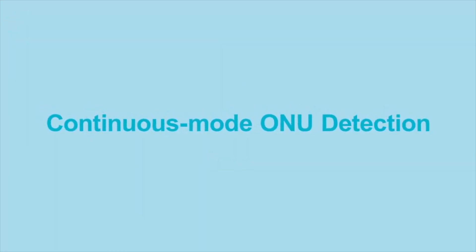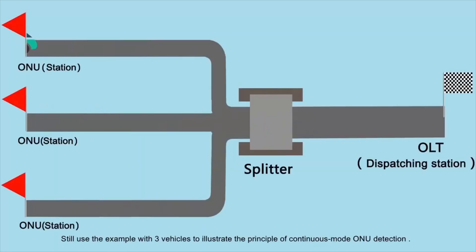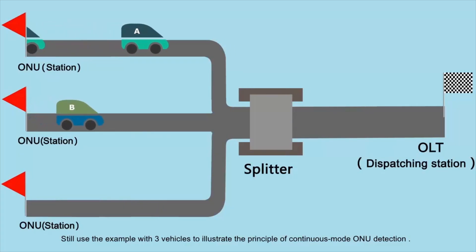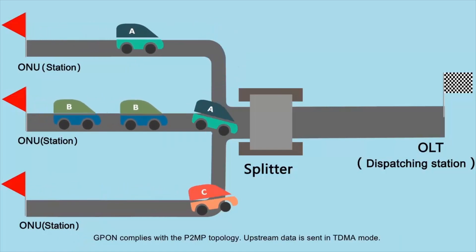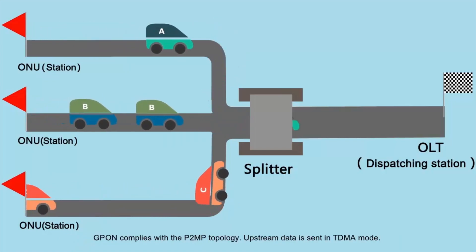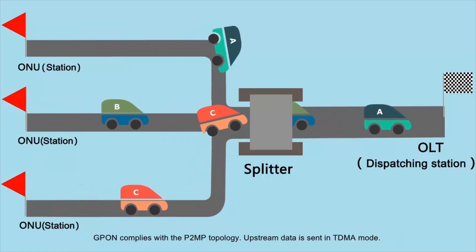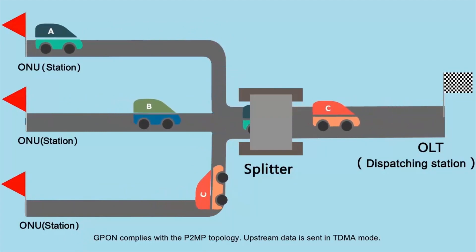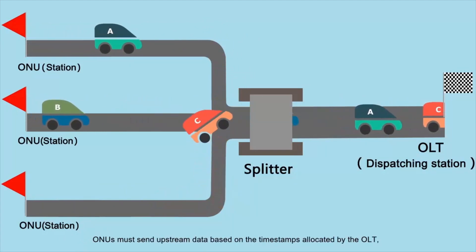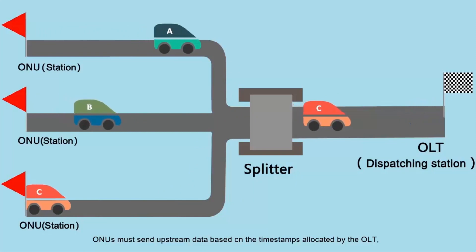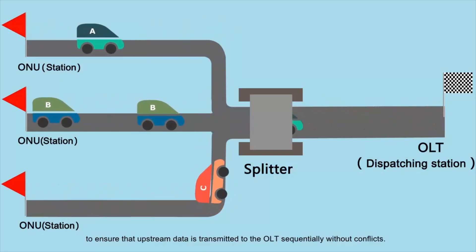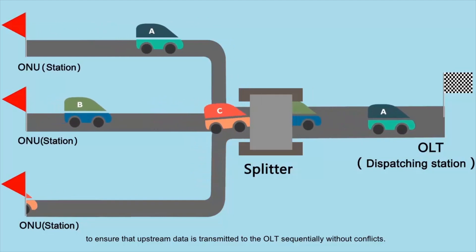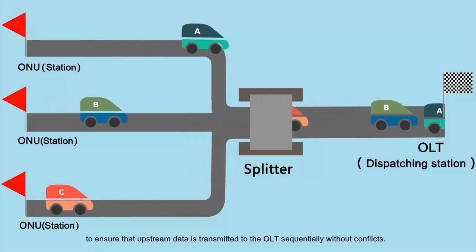The Burst Optical and Electric Technology is adopted to address this problem. It improves the vehicle performance and enables the vehicles to immediately depart based on the scheduled time. G-PON complies with a P2MP topology, and upstream data is sent in TDMA mode. ONUs must send upstream data based on time stamps allocated by the OLT to ensure that upstream data is transmitted to the OLT sequentially without conflicts.